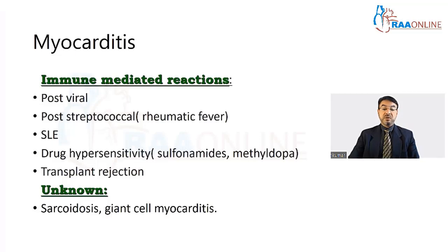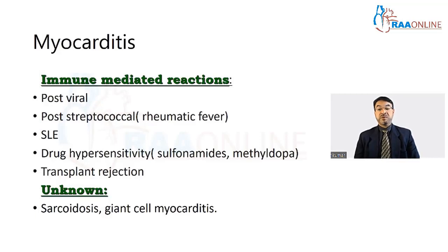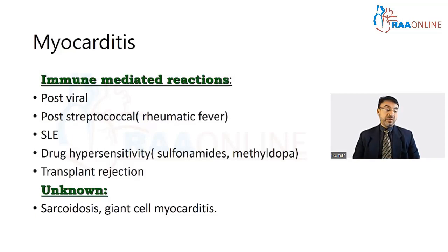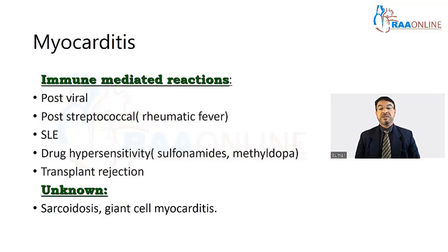Immune-mediated causes include post-viral and post-streptococcal responses, the latter most commonly seen in rheumatic fever caused by streptococcal infection. Systemic lupus erythematosus and drug hypersensitivity — for example to sulfonamides and methyldopa — are also recognized causes, as is rejection after a transplant. Unknown causes include sarcoidosis, a multi-system disease producing granulomas that can affect the heart, and giant cell myocarditis.